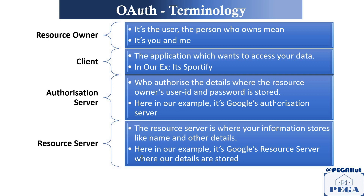Next is the client. In our example, the client is nothing but Spotify — basically the application which wants to access your data. The application that wants to access your data is Spotify. The second term is the authorization server. The authorization server is the one that authorizes the data where the resource owner's user ID and passwords are stored. In our example, Google stores your user ID and password, and Spotify is trying to connect to Google. So when you sign in, you sign in on Google's sign-in page — that is Google's authorization server.